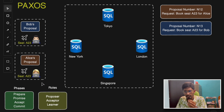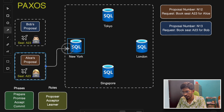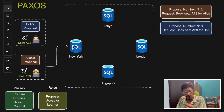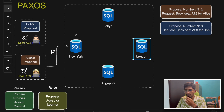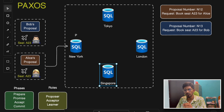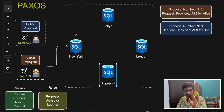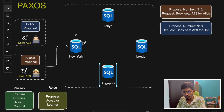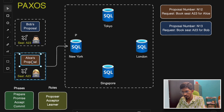In this example, the Paxos roles are: the database node that receives LS's booking request from New York acts as the proposer. The acceptors are the other database nodes. Once consensus is reached, all nodes learn the final decision — that's the learner role. Let's simulate the scenario: LS tries to book seat A23 and the New York database node wants to log the seat for LS.